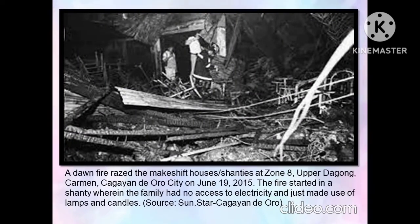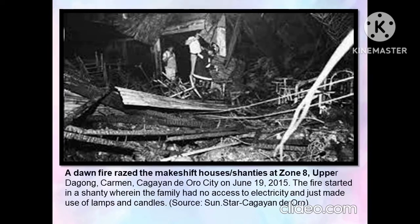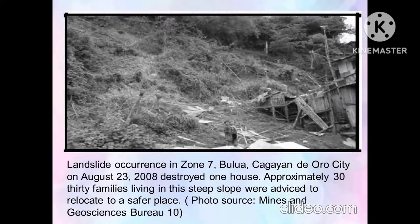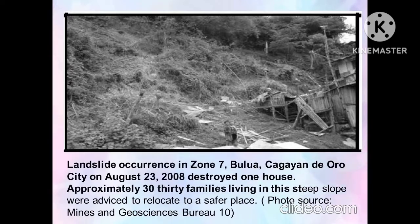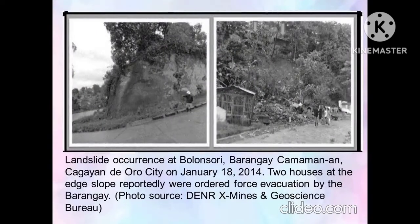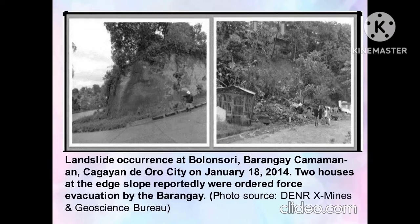Another picture shows a dawn fire that razed makeshift houses and shanties at Zone 8, Upper Dagong, Carmen, Cagayan de Oro City on June 19, 2015. Another picture shows a landslide occurrence in Zone 7, Bulua, Cagayan de Oro City on August 23, 2008, which destroyed one house; approximately 30 families living on the steep slope were advised to relocate to a safer place. Another picture shows a landslide occurrence at Bulunzori Barangay, Cagayan de Oro City on January 18, 2014, where two houses at the edge of the slope were ordered into forced evacuation by the barangay.